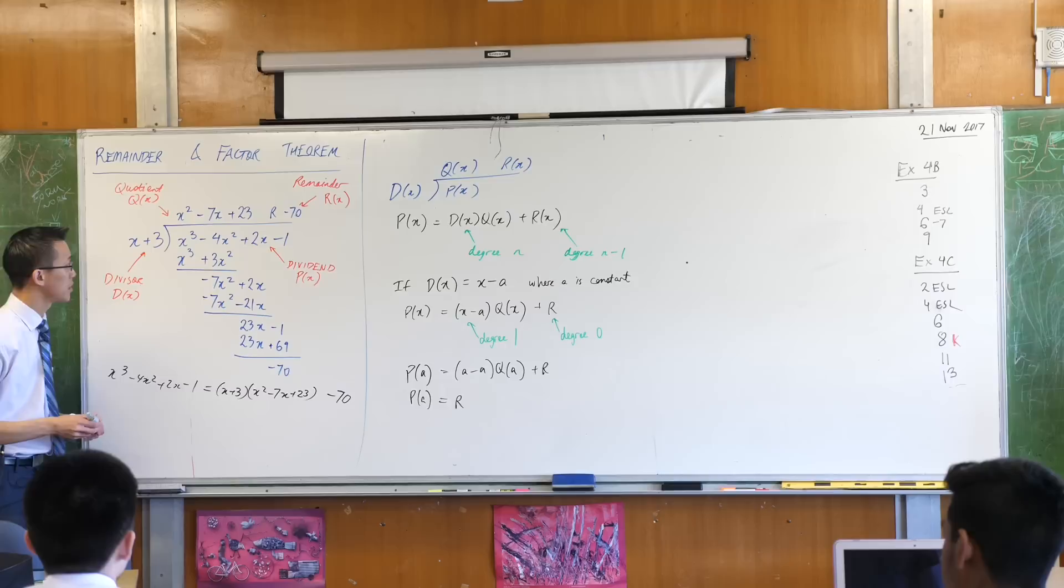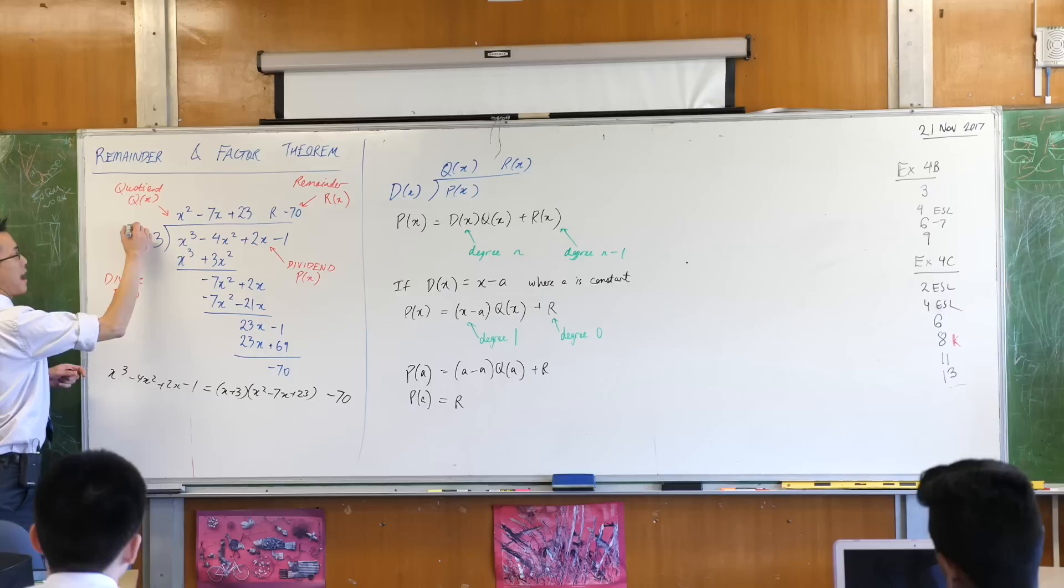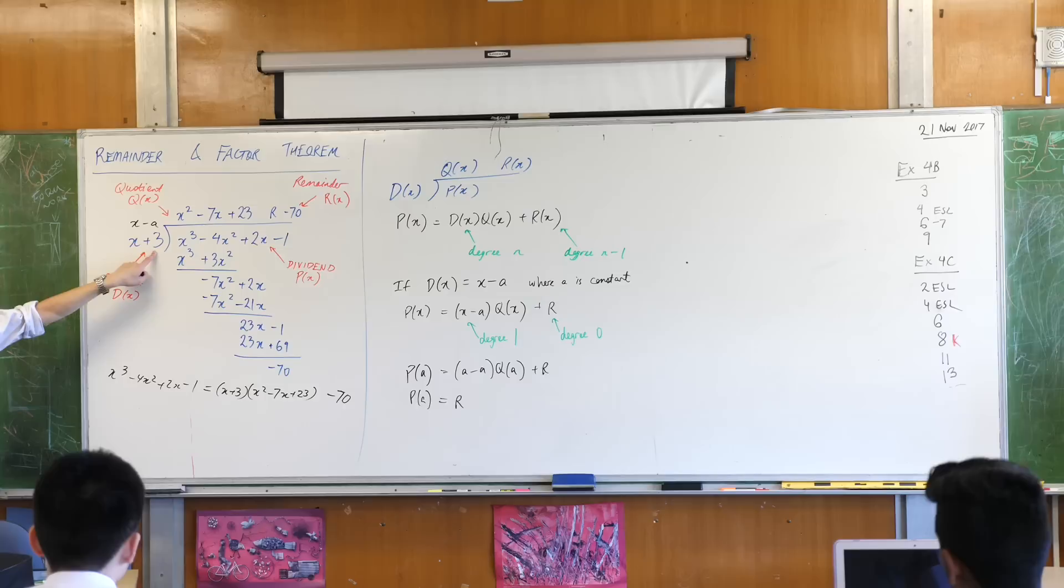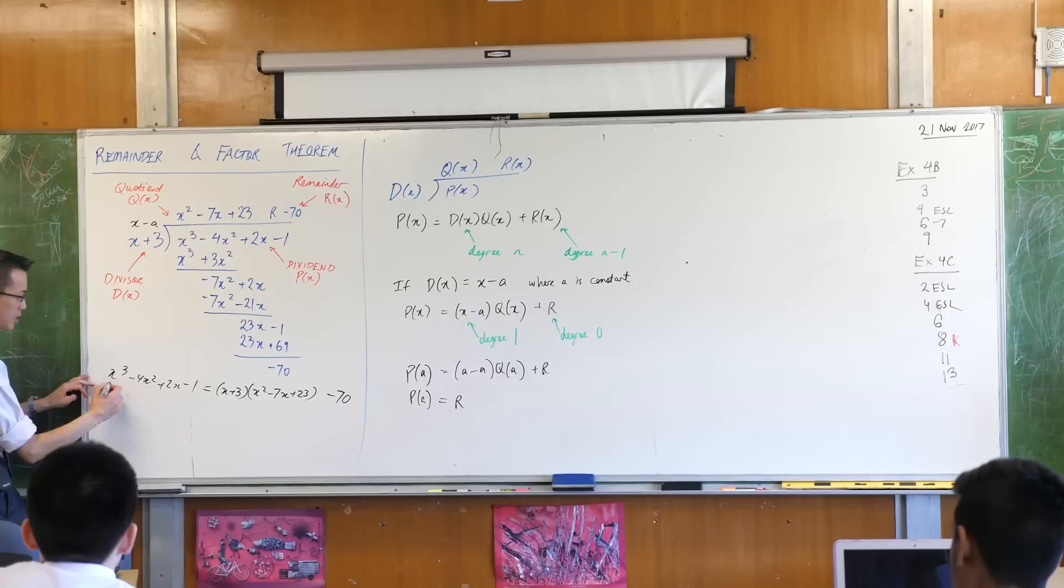So what this means is, if I come back over here, this original example that we did, if this thing is my x minus a, what is a in this case? Look carefully. Yes, negative 3, isn't it? Because it's x minus negative 3 will give me this divisor.